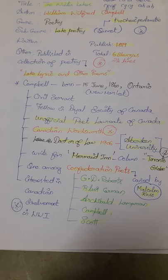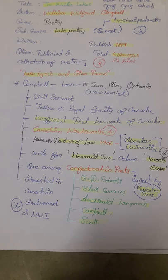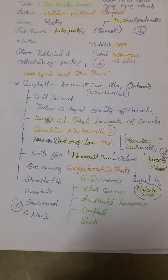He was one among the confederation poets. The confederation poets were G.D. Roberts, Bliss Carmen, Archibald Lampman, Campbell and Scott. This confederation poet term was coined by Malcolm Ross. He is interested in the Canadian involvement in World War I also.